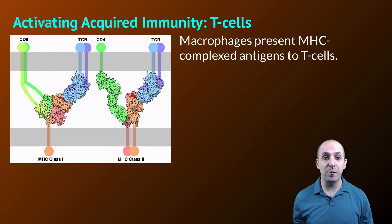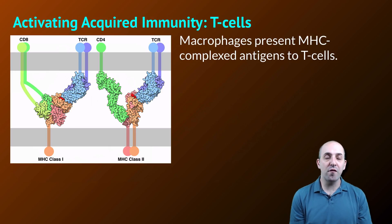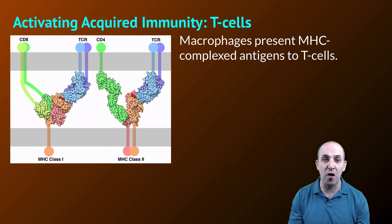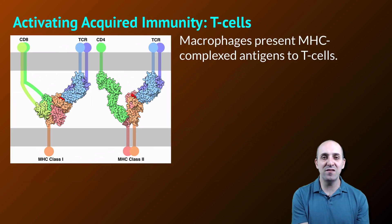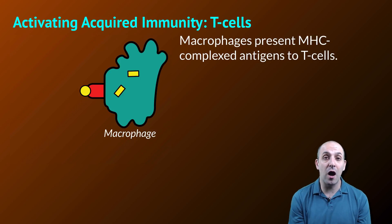It's important to understand that the two branches of the immune system are not totally independent. Once phagocytosis occurs in the innate immune response, macrophages that have ingested pathogens will start to express molecules from those pathogens on their cell surface. Those pathogenic molecules — called antigens — have to be associated with proteins always present on the surface of every cell in our body, called MHC complexes. In a presenting macrophage, these MHC complexes will be associated with a particular antigen, which will then be presented to a T cell.